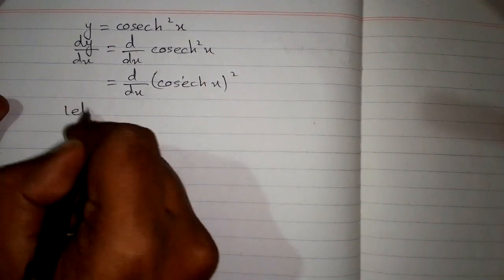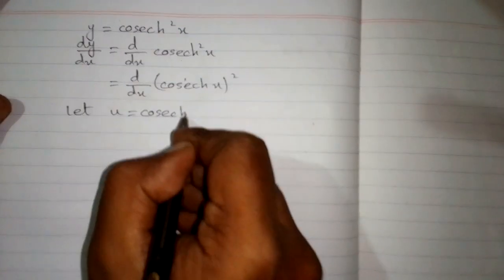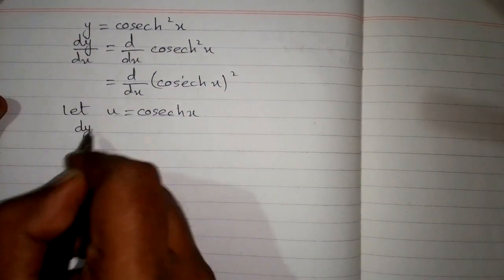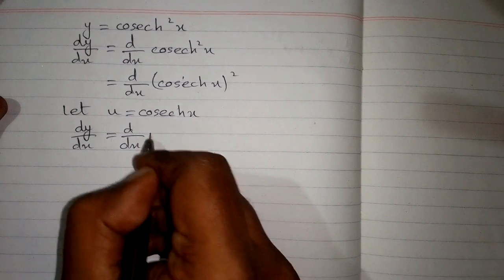Now let u equal hyperbolic cosec x. So the derivative dy/dx equals d/dx of u squared.